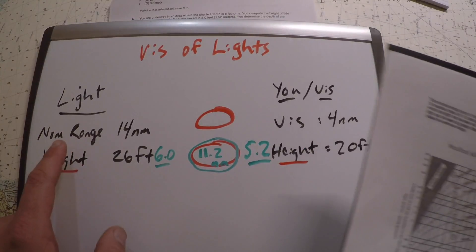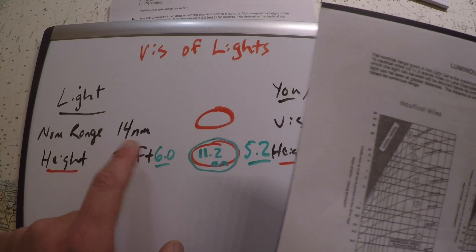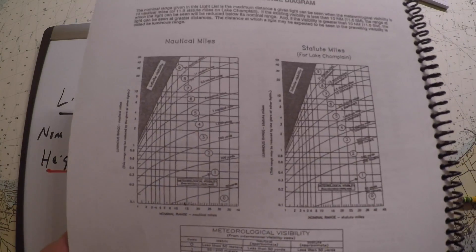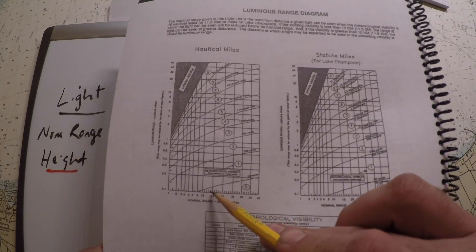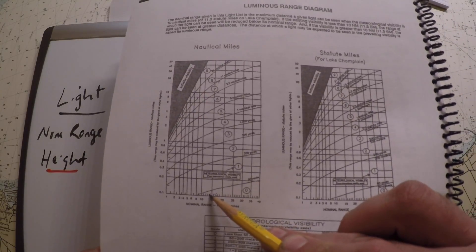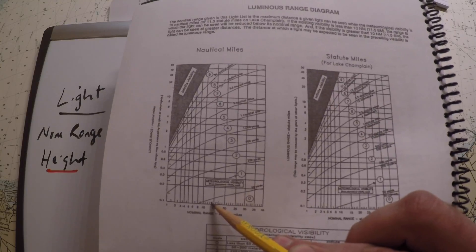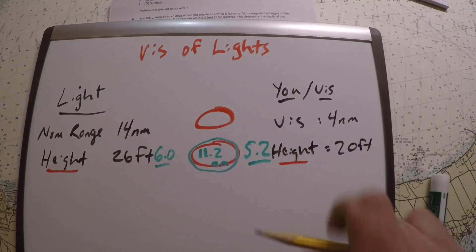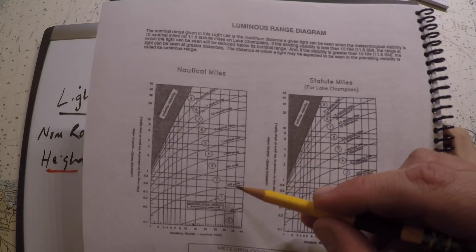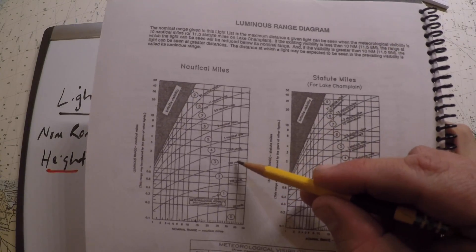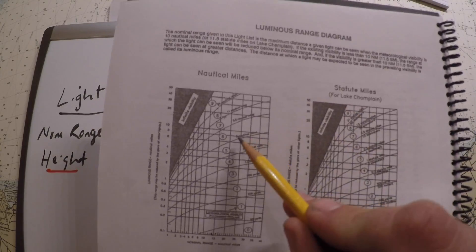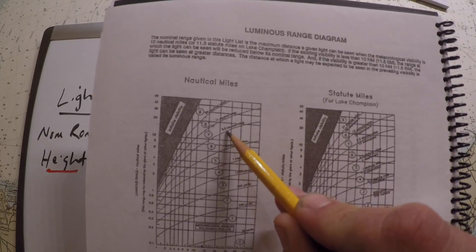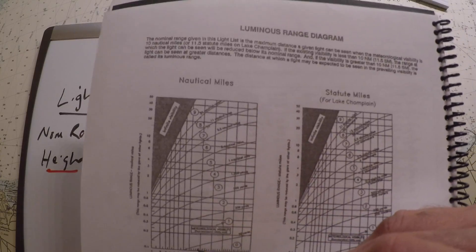What we need to do is enter this table with the nominal range. That's the range that you could see a light given average meteorological visibility of 10 miles. Our nominal range was 14, so we start down here at the 14 and go up in the diagram until we come across the visibility of 4 miles. You'll notice the visibility curves: 200 yards, 500 yards, 1 mile to 5.5, so we're somewhere between the 2 and the 5.5 nautical miles.